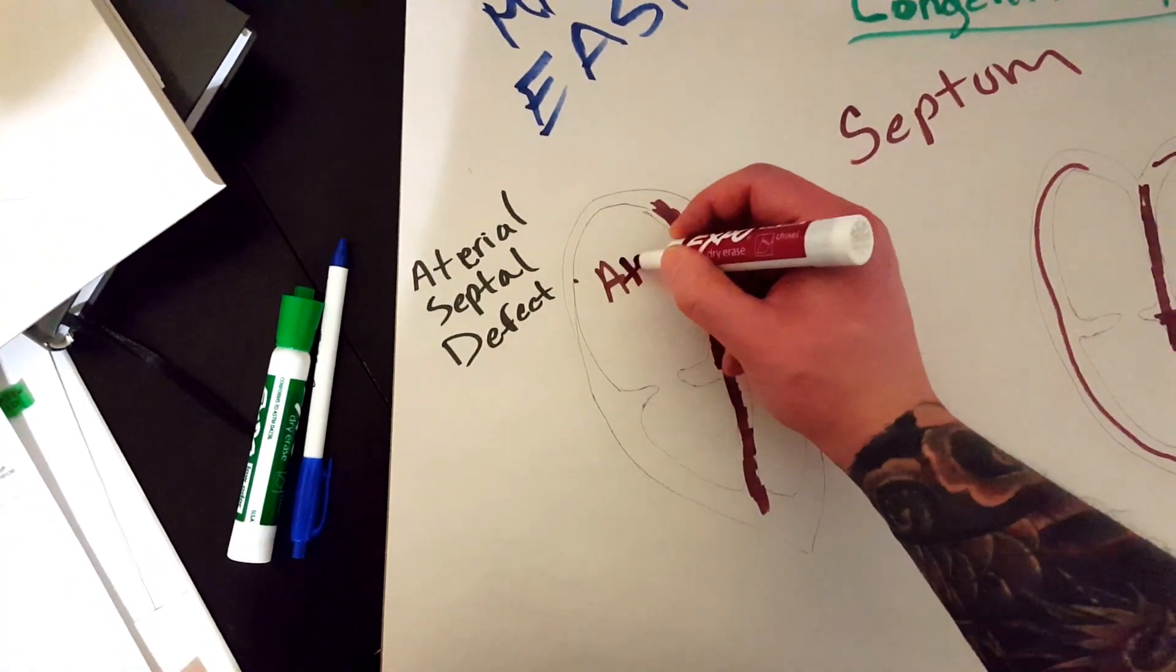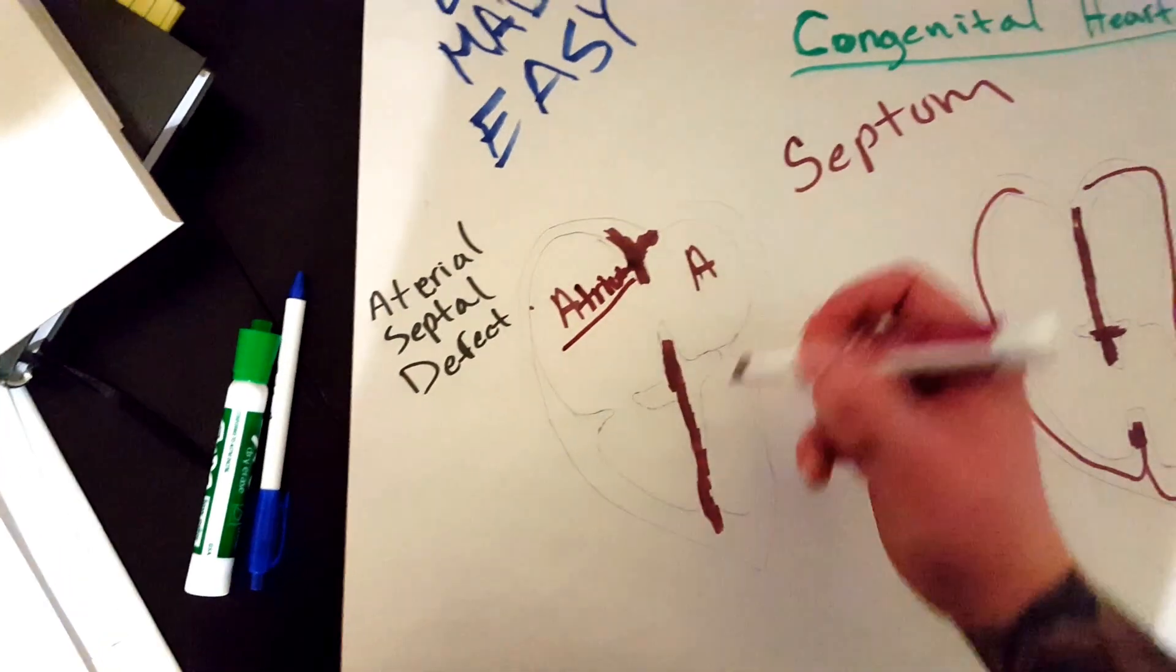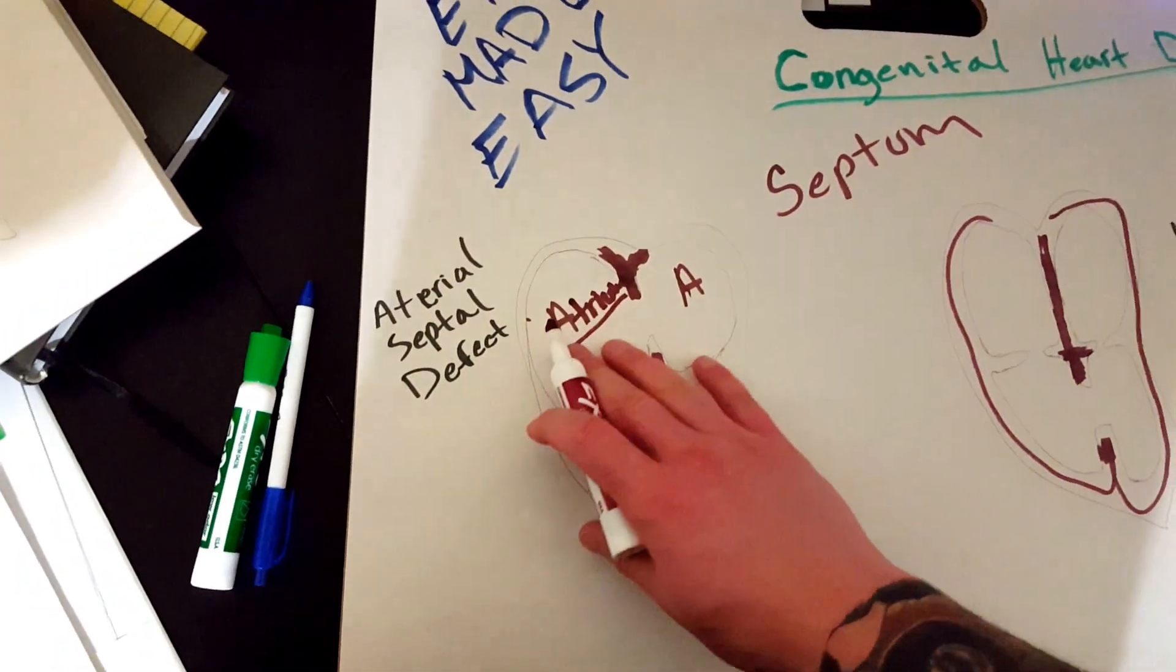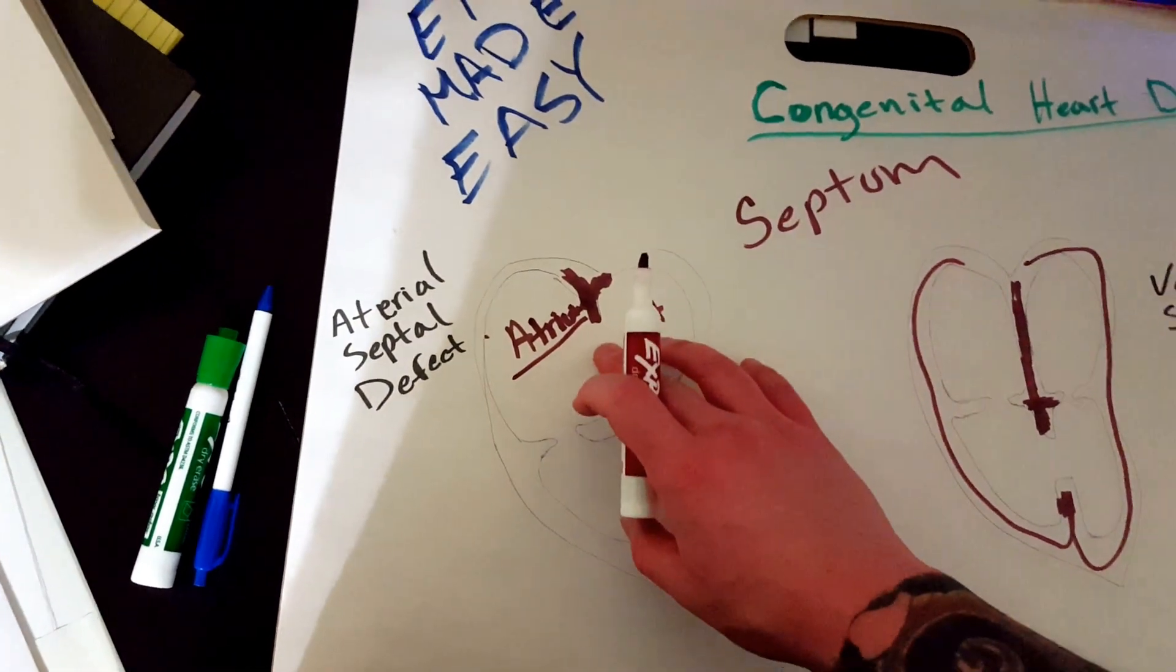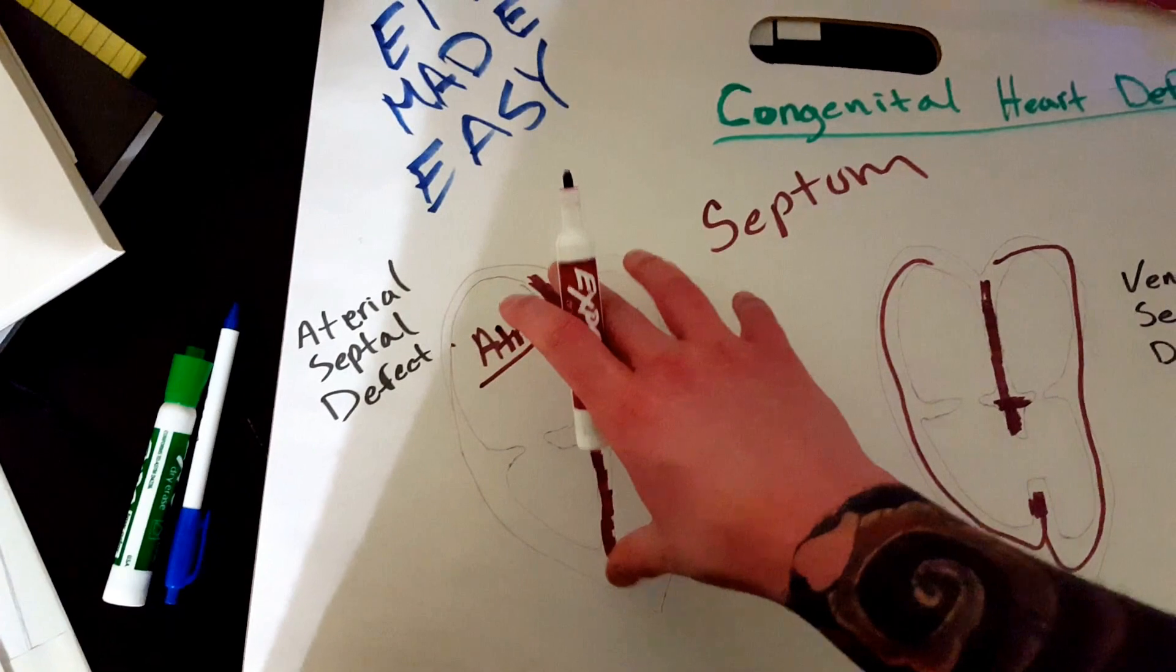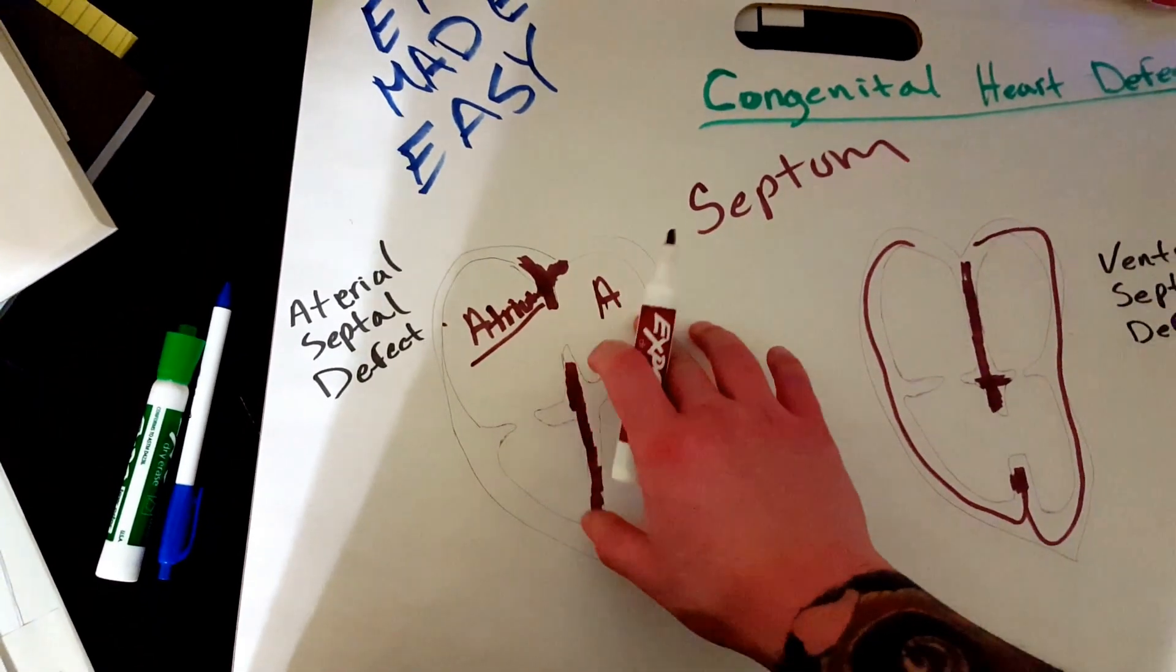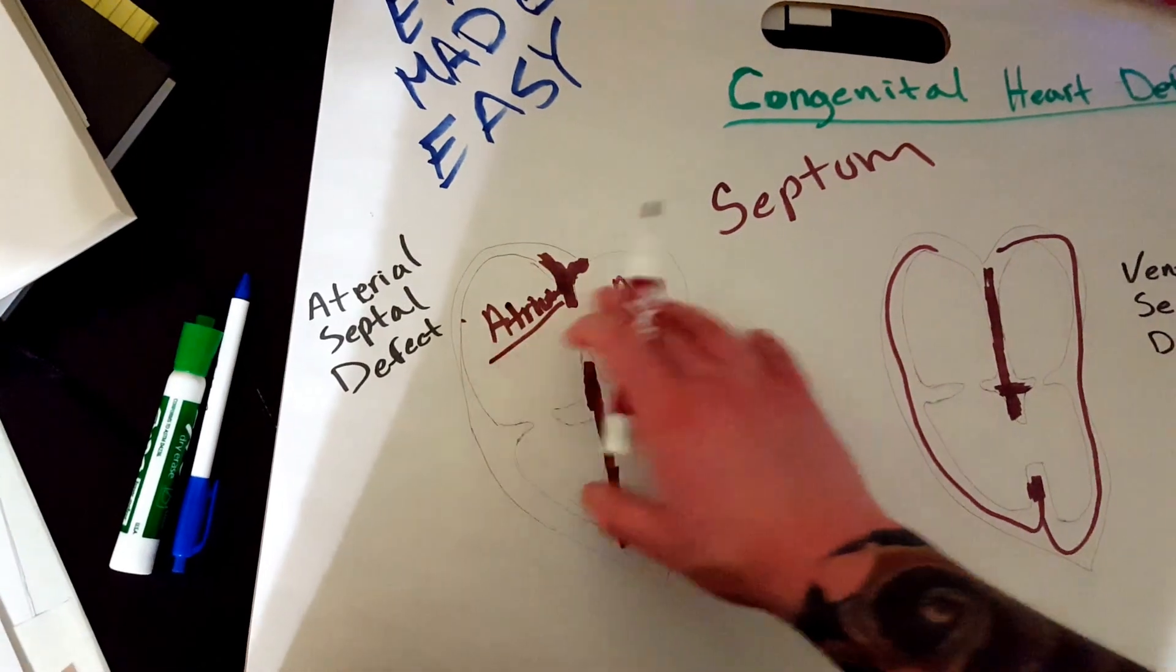on top right here, you have the atriums. Barely enough room. Atriums. That's good enough. Atrium. So, if you have a defect, when we're talking about a defect, really, when it comes to the heart, we mean a hole. So, there's a hole somewhere. There's a hole that's leaking, that's allowing blood to leak from one place to another place.